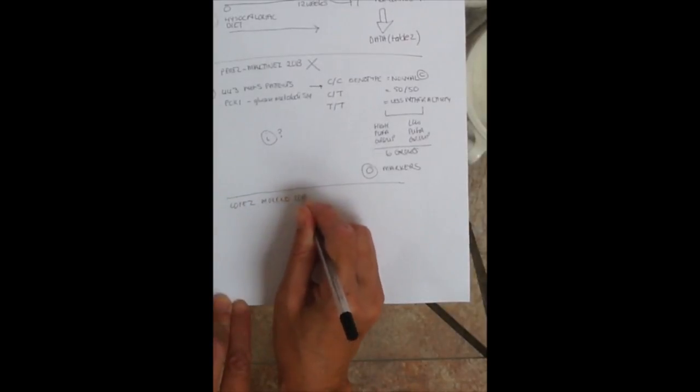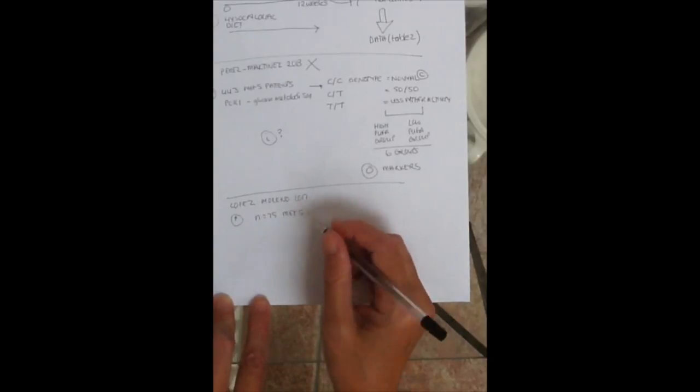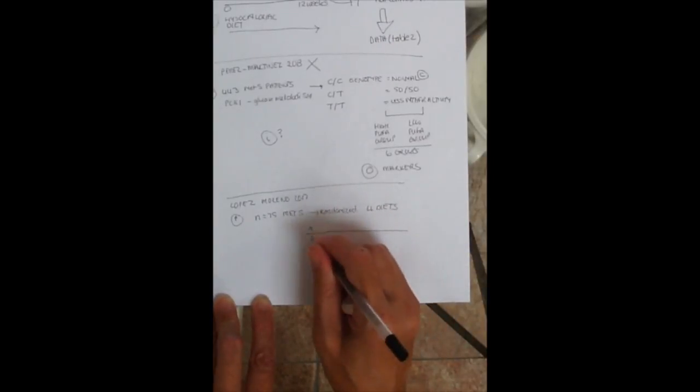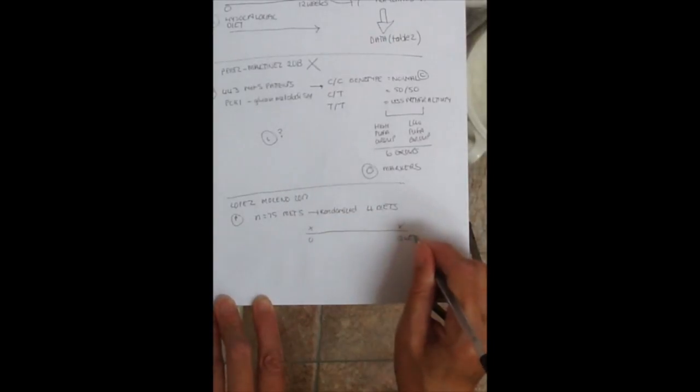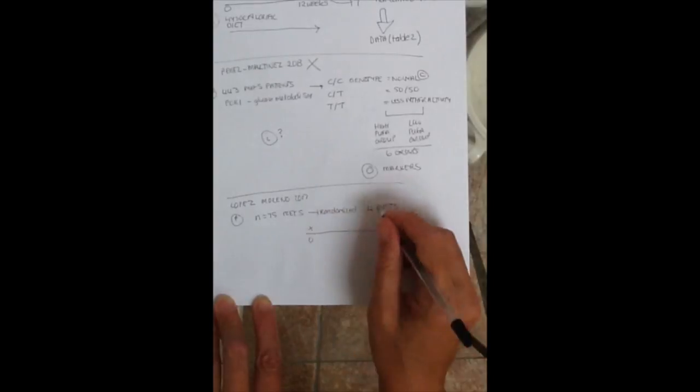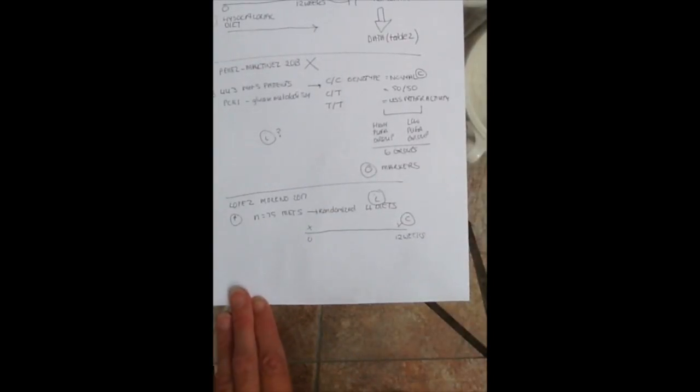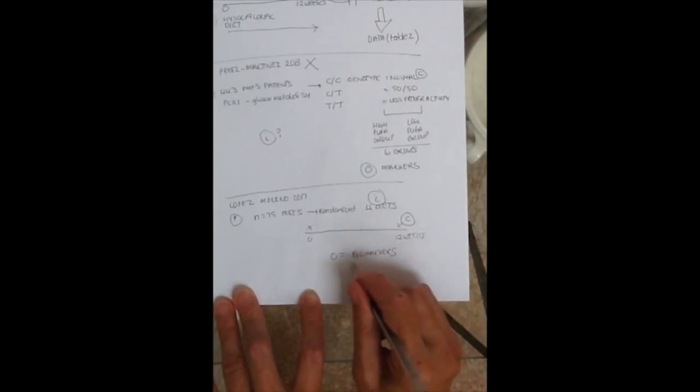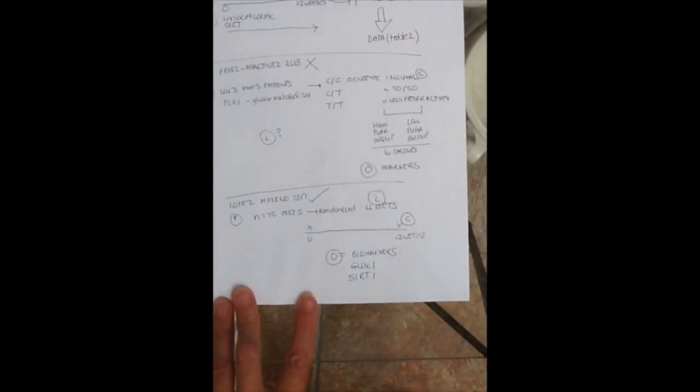But the final study—I hope this is helpful to you—again, the population is a subset of that big lipogenetic trial. They've got 75 metabolic syndrome patients. They're randomizing them into four dietary groups, so there's an intervention. You've got that 12-week time frame again. And at the end they're measuring various biomarkers and two genes. So that's a good example.